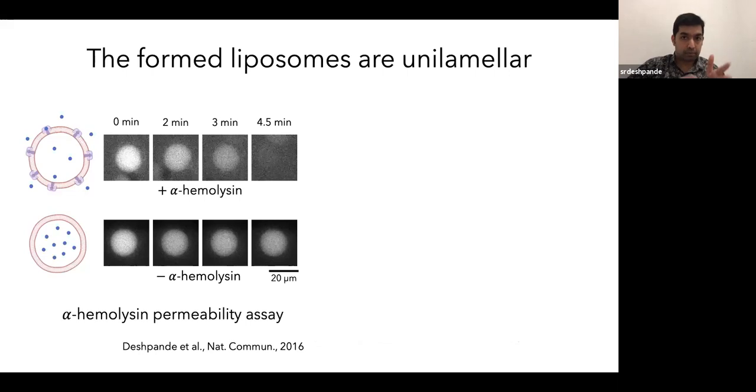And I think this is very crucial if you want to maintain the right stoichiometry of complex mixture of components. Another thing is the formed liposomes are unilamellar, meaning they have only a single lipid bilayer as the boundary. You can check this using membrane proteins that get inserted only in a single bilayer, for example, alpha hemolysin. So when we insert alpha hemolysin in the membrane, the fluorescent dye that is encapsulated quickly leaks out within a few minutes. If you do not have alpha hemolysin, the fluorescent dye just remains encapsulated, which really shows that the membrane is unilamellar.